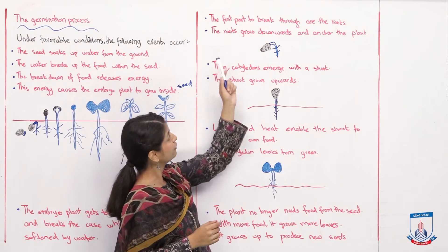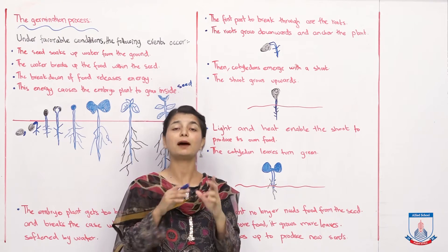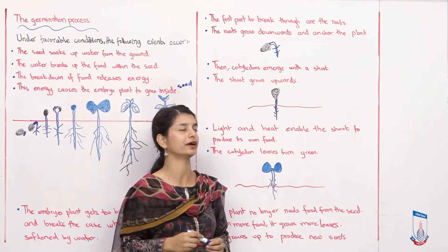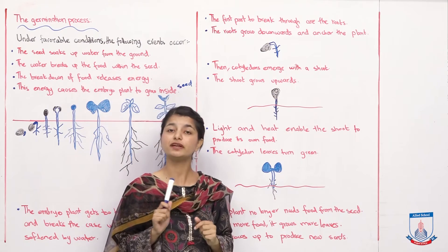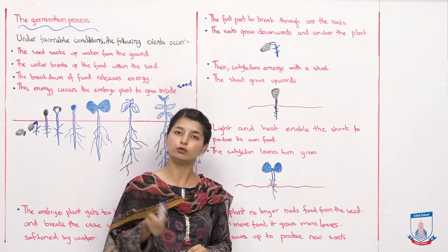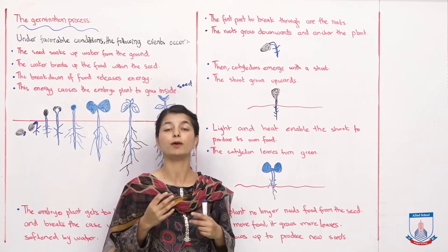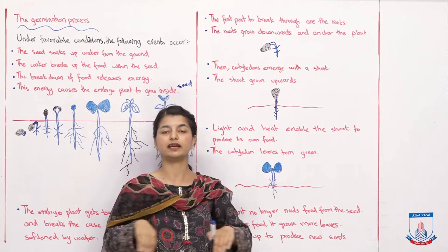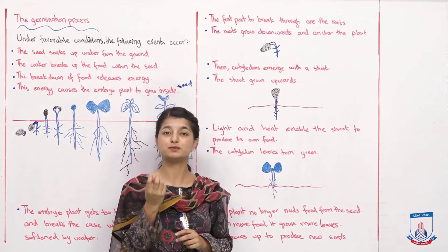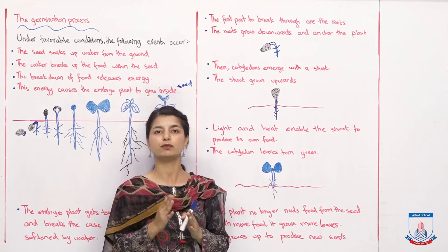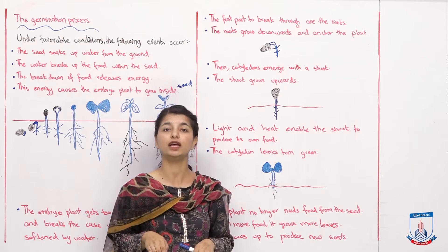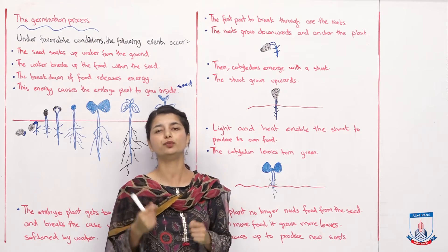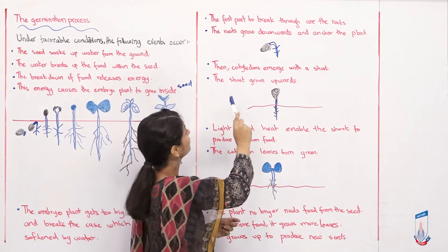The first part to break through the seed coat are the roots. The roots grow downwards and anchor the plant. There is a reason roots grow downwards and a reason roots are produced first — the plant is creating its position and providing its strength through roots. The roots dig into the soil and keep the plant anchored, protecting it and firmly establishing its place so that the plant does not fall over.